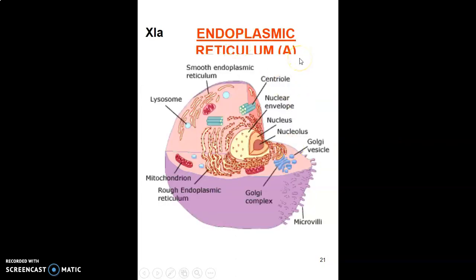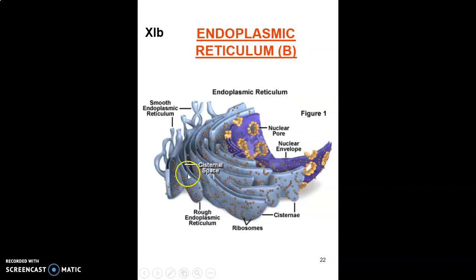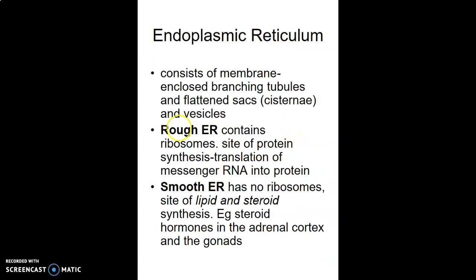There are two types of endoplasmic reticulum: smooth and rough. The rough ER has ribosomes studded onto it. The endoplasmic reticulum consists of membrane-enclosed branching tubules and flattened sacs called cisternae and vesicles. The rough ER is a site for protein synthesis where translation of messenger RNA into a polypeptide chain occurs, forming a protein.